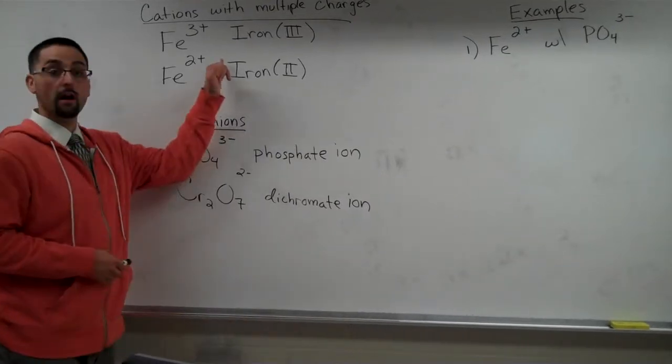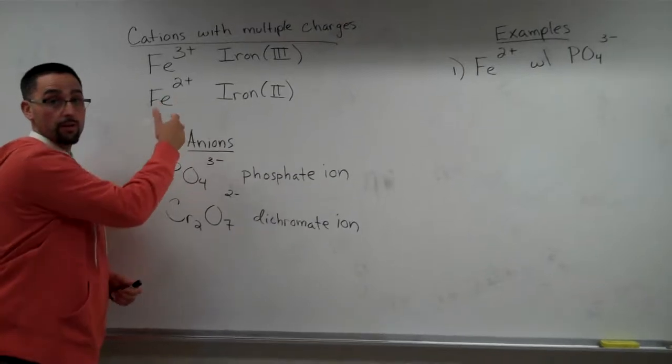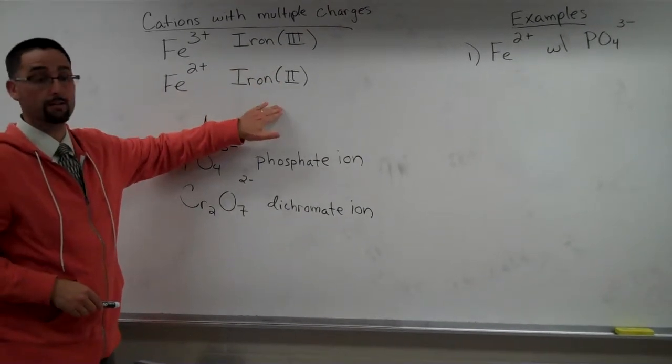For example, iron. Iron can form a 3 plus or a 2 plus. So we have to distinguish between the two different ions.